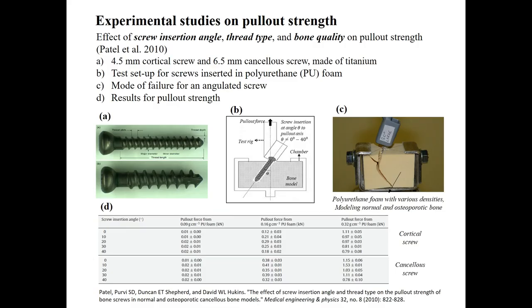Researchers have conducted experimental and computational studies on how different parameters affect the pull-out strength of bone screw constructs. In a study performed by Patel and her colleagues, the effects of screw insertion angle, thread type, and bone quality were investigated. The pull-out strength was determined for two types of titanium screws at varying angles between 0 and 40 degrees. For modeling normal and osteoporotic bones, three types of polyurethane foam with various densities were utilized. An axial displacement with a constant rate was applied to the screw and the associated axial forces were recorded, with the maximum value reported as the pull-out strength. The study showed that pull-out strength significantly increased with increasing PU foam density. For screws placed axially and sometimes at 10 degrees, the second failure mode occurred, while for screws inserted at 10 to 40 degrees, the PU foam material above the screw was crushed at the failure point.